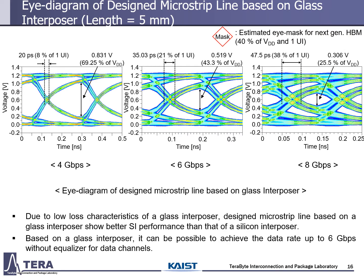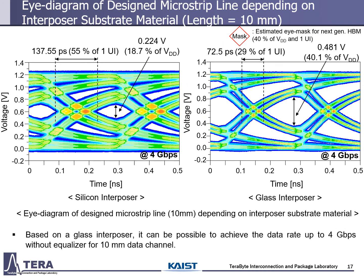This is the eye diagram of the glass interposer channel. Due to the low-loss characteristics of glass interposers, designed microstrip lines based on glass interposers show better signal integrity performance than those of silicon interposers. Based on glass interposers, it is possible to achieve a data rate up to 6 Gbps without equalizers. Furthermore, when the channel range becomes 10 mm, the silicon interposer channel cannot support 4 Gbps without equalizers, whereas the glass interposer channel can still achieve up to 4 Gbps without equalizers due to the lower loss of the glass substrate.